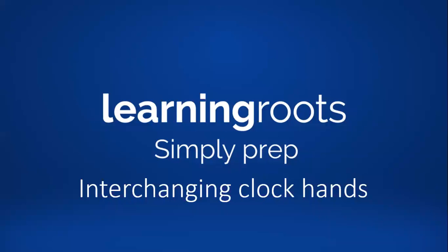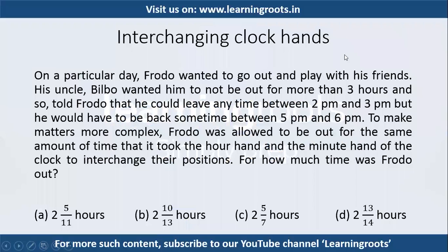This video is on interchanging clock hands. A question says that on a particular day Frodo wanted to go out and play with his friends. His uncle Bilbo wanted him to not be out for more than 3 hours, so told Frodo he could leave anytime between 2 pm and 3 pm but had to come back sometime between 5 pm and 6 pm. Frodo was allowed to be out for the same amount of time it took the hour hand and minute hand to interchange their positions. For how much time was Frodo out?